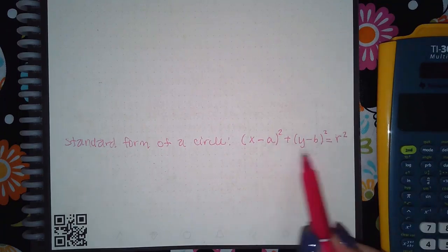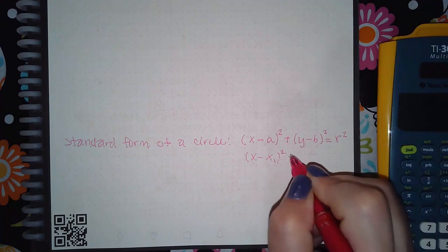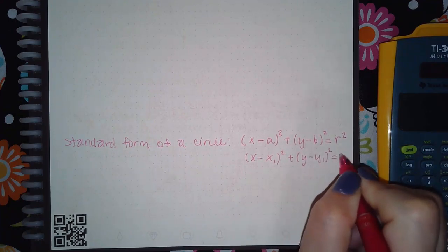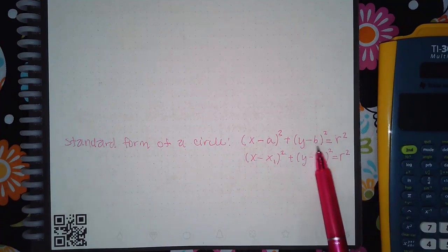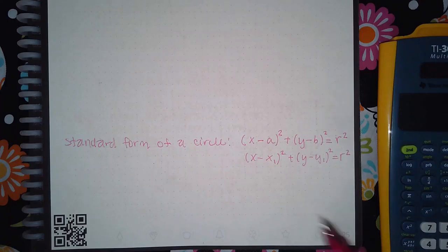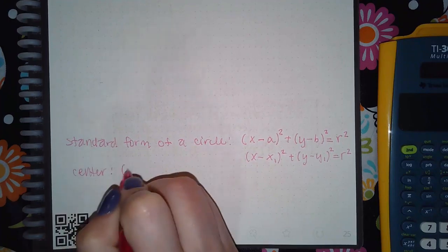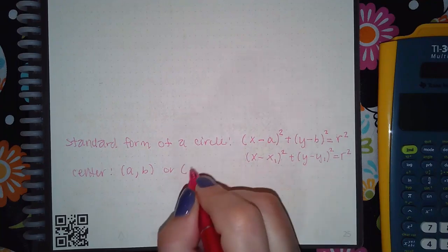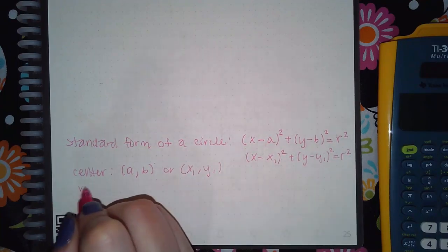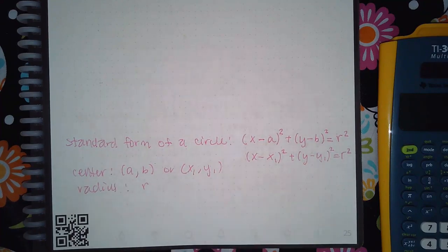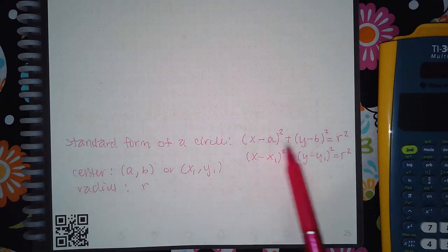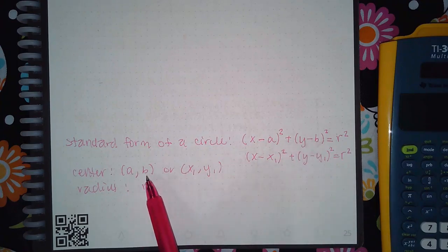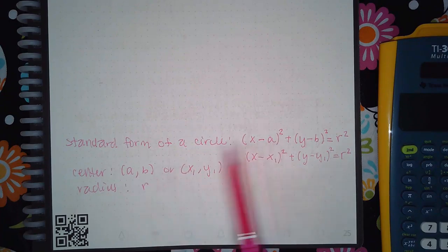They may use different notation — they may use x₁ and y₁ — just to keep you focused that this is a y-coordinate and this is an x-coordinate. It just depends on the notation you see, but understand that the center is going to be that point (a, b), or if you're using this notation, (x₁, y₁). Notice that there's a minus sign in the formula, but when I grab my center I only took positive a and positive b. You're going to be taking the opposite sign of what's inside the parentheses to figure out the center.